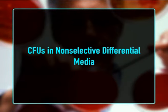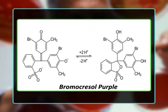CFU in non-selective differential media: a non-selective medium is supplemented with an agent capable of differentiating colonies produced by specific microbial groups that differ in metabolic or physiological characteristics. pH indicators are often used — colonies of cells capable of metabolizing lactose are differentiated from those that do not ferment lactose by growing them in agar supplemented with lactose and a pH indicator such as bromocresol purple. Lactose-fermenting colonies will be yellow while others will be white.